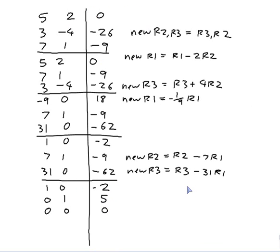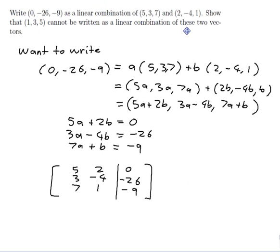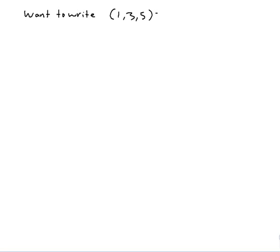So [0,-26,-9] = -2 times [5,3,7] plus 5 times [2,-4,1]. Now for the second part: show that [1,3,5] cannot be written as a linear combination of these two vectors. So I want to write [1,3,5] as a times [5,3,7] plus b times [2,-4,1].